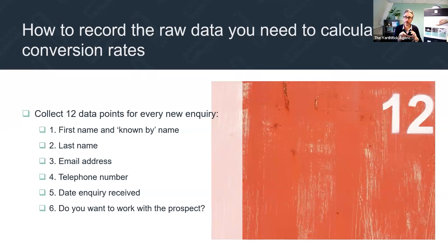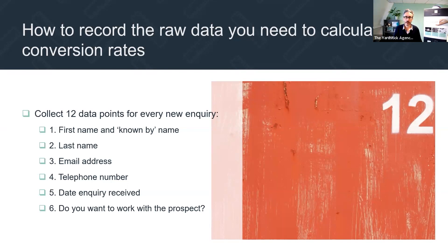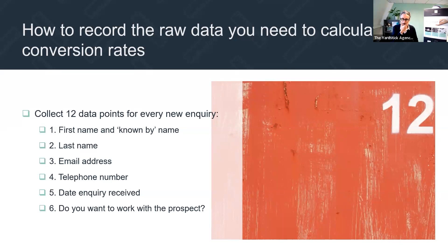If you don't have people's names and email addresses, you can't nurture them. Best practice is for every new inquiry to immediately be put into your newsletter database so you can send them a newsletter every month. If you don't record the inquiry and don't have their name and email address, how can you possibly add them to your newsletter database? You also need to get GDPR right, but from a basic perspective, not recording their data makes nurturing impossible.